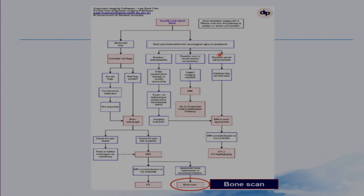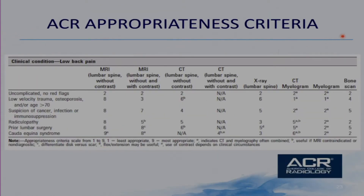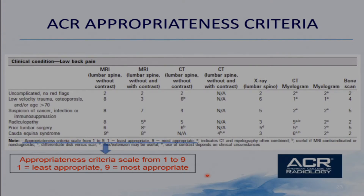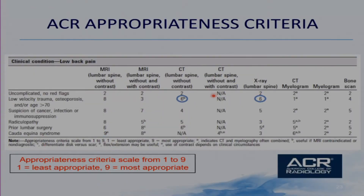Similarly, if there are neurological symptoms or signs, we can go through this path. This is the ACR Appropriateness Criteria for the clinical condition of low back pain. There is an appropriateness criteria scale from 1 to 9, with 1 being least appropriate and 9 being most appropriate. For example, MRI will have a low score of 2 for uncomplicated low back pain without red flags, but a high score of 9 for Cauda Equina syndrome. CT and X-rays have a high score for trauma, and if suspecting cancer, infection, or immunosuppression, a bone scan will have a higher score.